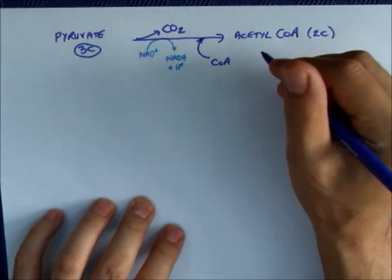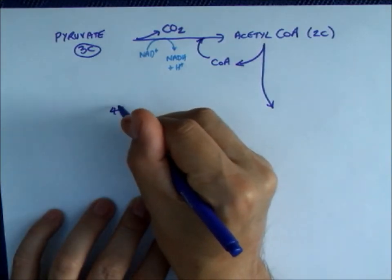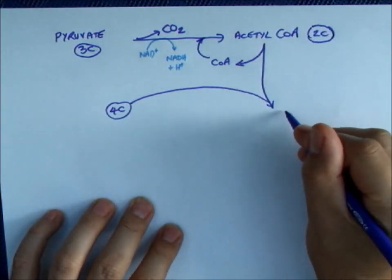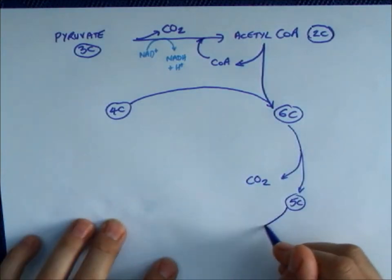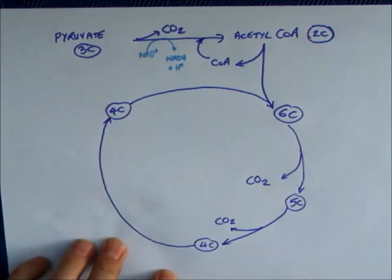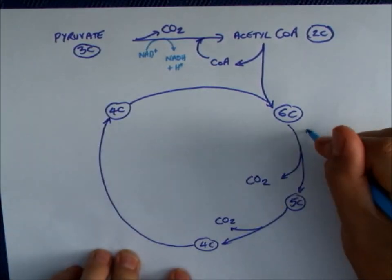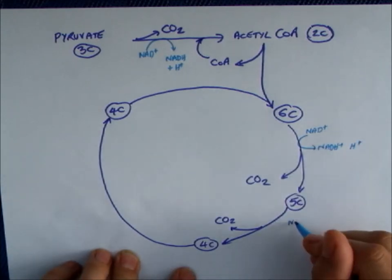The acetyl-CoA then enters the Krebs cycle by being added to a 4-carbon molecule which, plus these two carbons, becomes a 6-carbon. The 6-carbon loses carbon dioxide to become 5-carbon and another carbon dioxide to become 4-carbon which takes us back to the beginning. For each carbon dioxide loss, an NAD molecule is reduced to accept spare hydrogens.